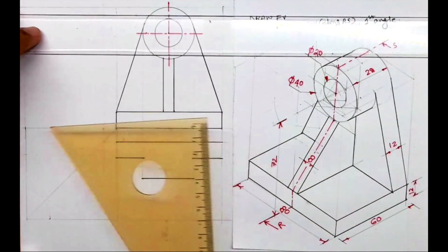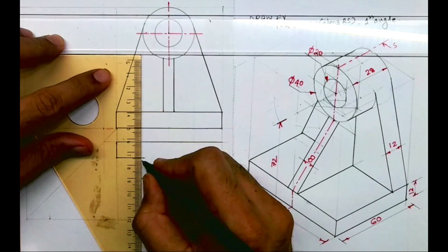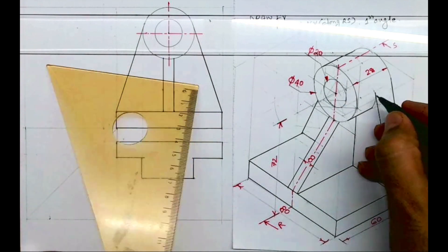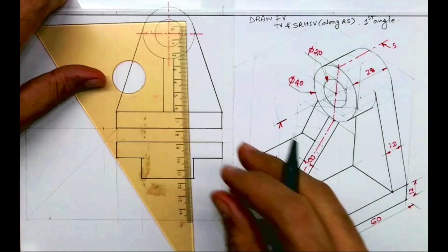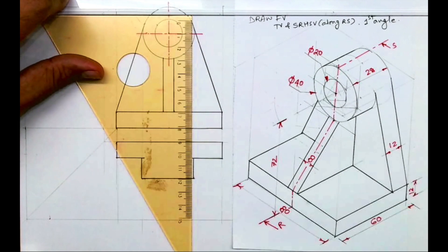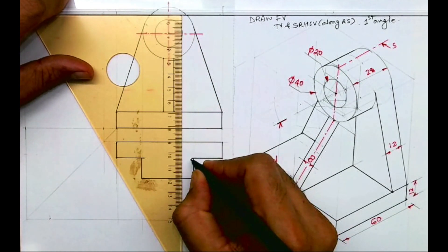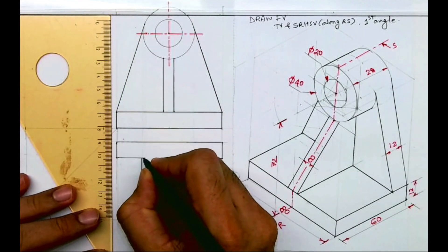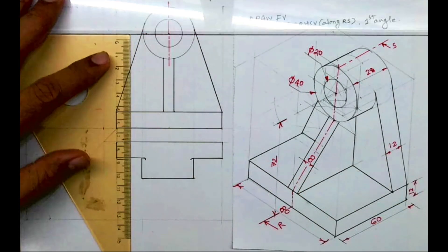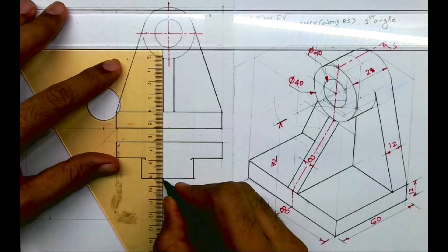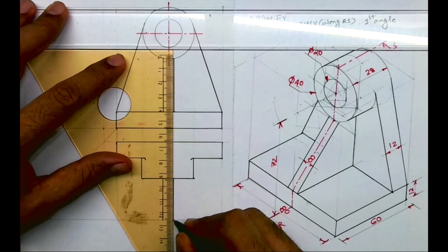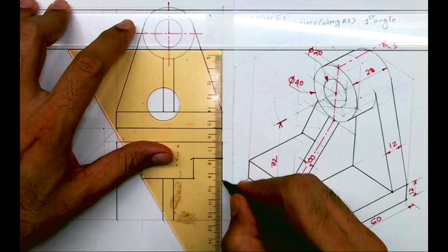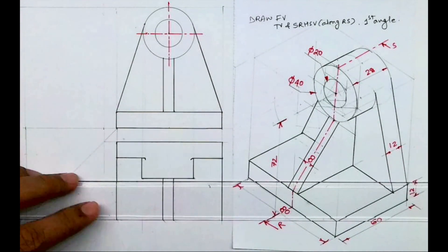This portion will be dark. After drawing this, when you see from the top, this extension of the rib is here — you draw a vertical line and extend it to that point and show a slight curve. This is called a merging curve. When you see from the top it appears as a rectangle, and the full body will be dark — this is also a rectangle.